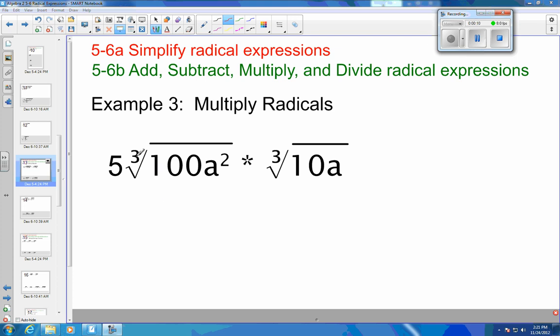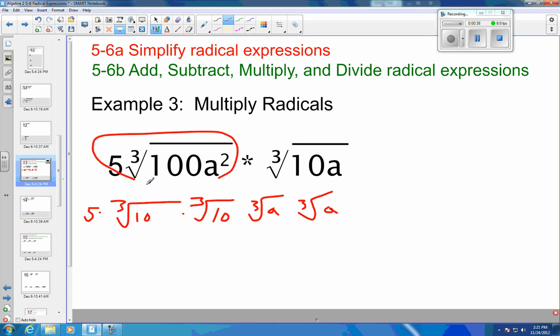So we want to take the cube root times a cube root and find out what we get. Remember, you can break things apart, so this is actually 5 times the cube root of 10 times the cube root of 10 times the cube root of A, times the cube root of A, and that takes care of all of that one, and then times the cube root of 10 and times the cube root of A, and that takes care of this one over here.